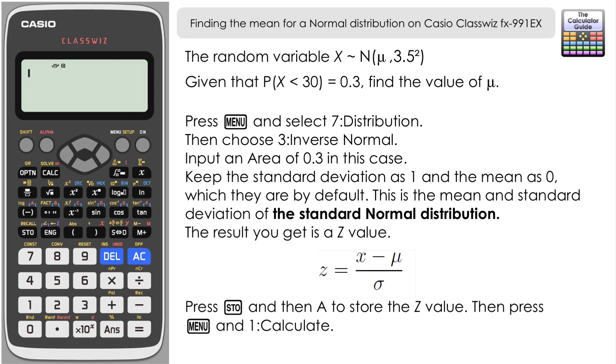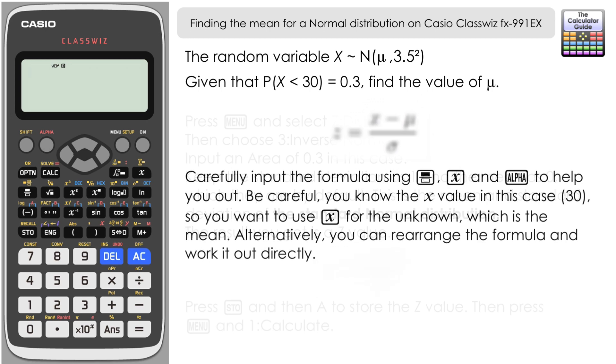And we're going to carefully input the formula and we're going to use x which is the unknown for the mean rather than μ and then use the solve feature on the Casio ClassWiz FX-991EX to help us find out what the mean is. So let's set this up as the formula.